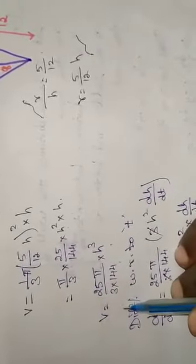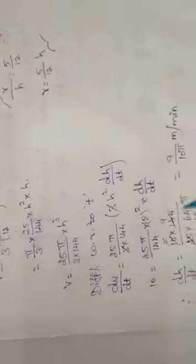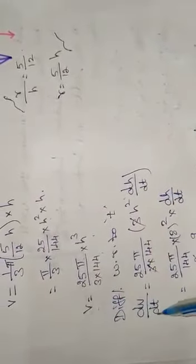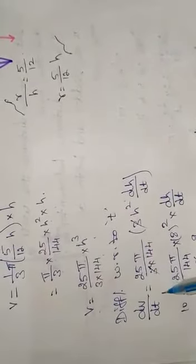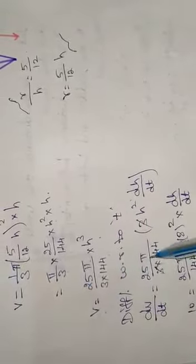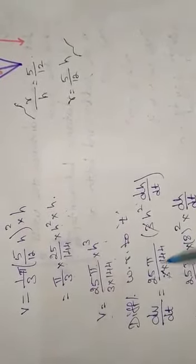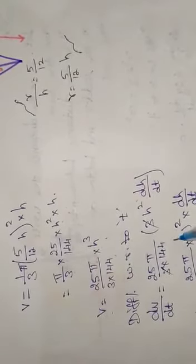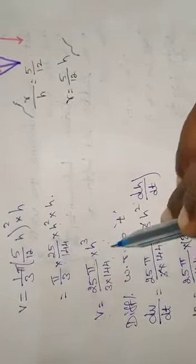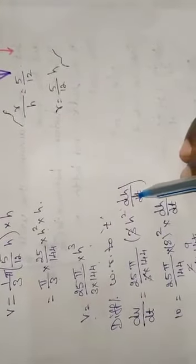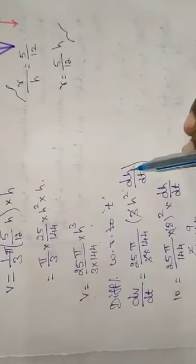The given equation can be differentiated with respect to time t. Therefore dV/dt is equal to, these are values or coefficients, so keep it as 25π / (3 × 144). Here differentiate the h³, we get 3h². Again, h with respect to t means we get dH/dt.